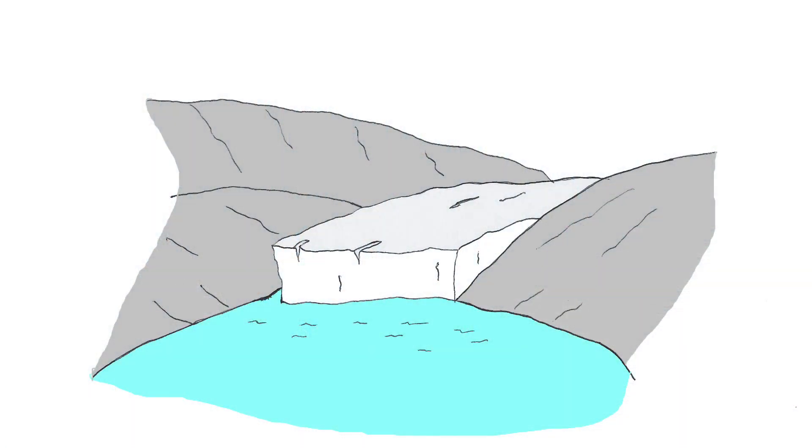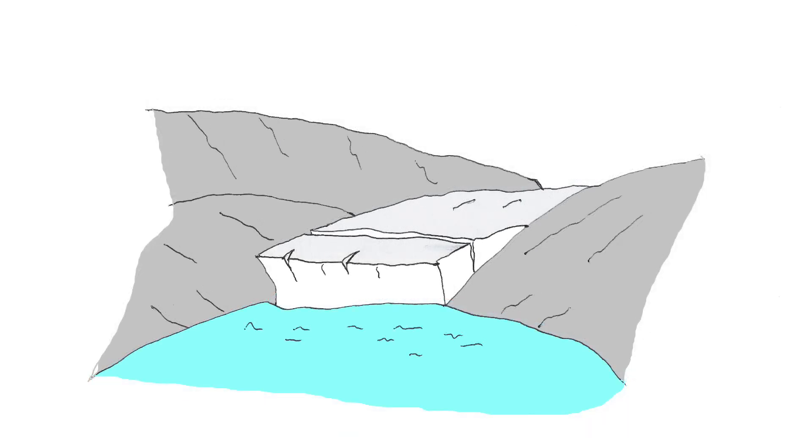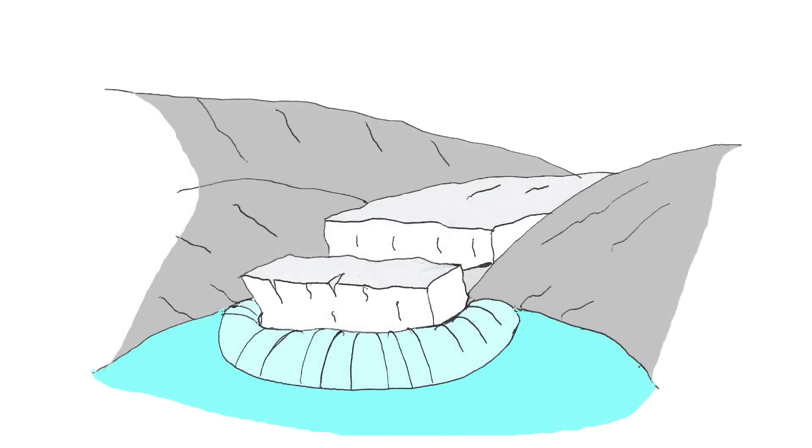In this sketch, you can see a glacier in the mountain valley and a lake in front. As temperature rises, a crack may form in the glacier and the glacier breaks off into the lake in front.